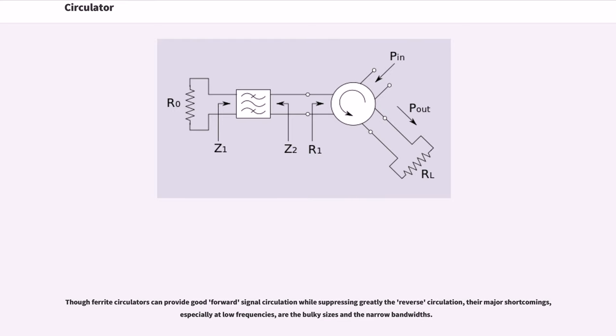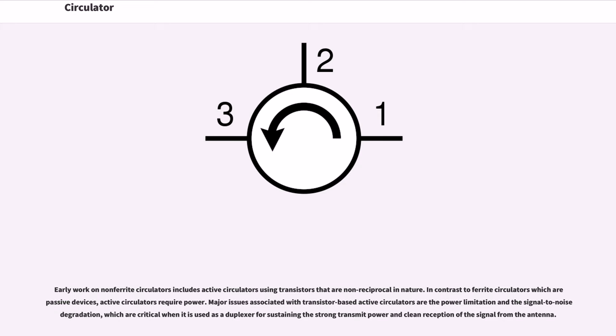Early work on non-ferrite circulators includes active circulators using transistors that are non-reciprocal in nature. In contrast to ferrite circulators which are purely passive devices, active circulators require power. Major issues associated with transistor-based active circulators are the power limitation and the signal-to-noise degradation, which are critical when it is used as a duplexer for sustaining the strong transmit power and clean reception of the signal from the antenna.